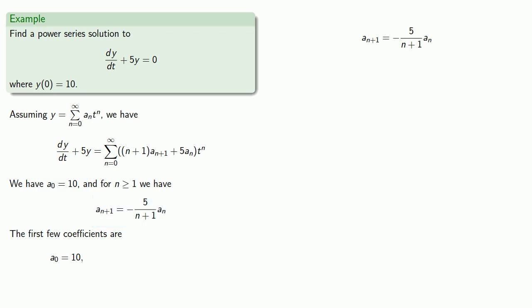So if n equals 0, our formula gives us, substituting our value for a0, a1 equals minus 50.